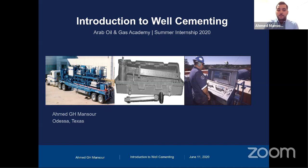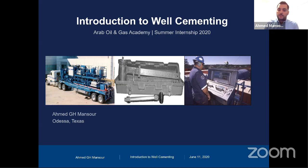One of the most common problems we deal with in horizontal cement jobs is the bonding between the cement and the formation, and the cement and the casing. After the cement job, the well completion team comes over and starts fracking the formation. If you have bad bonding between the cement and casing or cement and formation, you end up with communication between frack stages. This leads to a big remedial job to close the communication channel between multi-stage frack. So you need to ensure no channeling and no free water in your cement in the horizontal lateral section, so when you do your frack job you won't encounter problems or need remedial work.